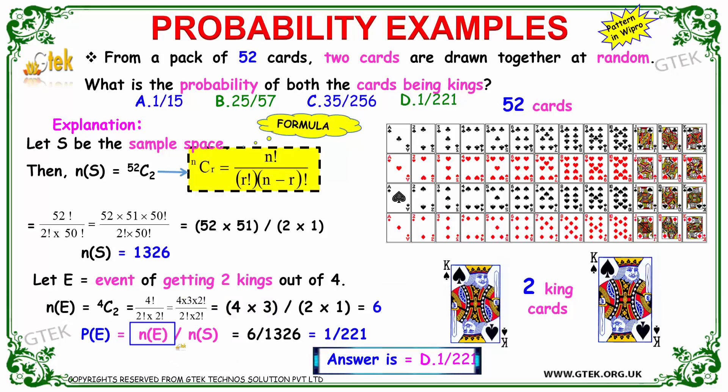So the option is number of possible events divided by number of sample space. That's 6 divided by 1326. The answer is 1 divided by 221.